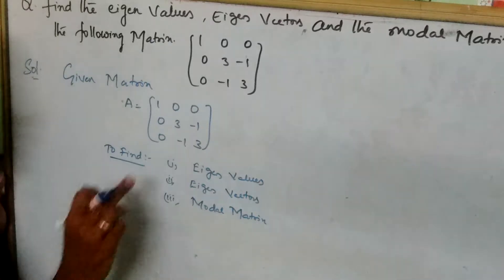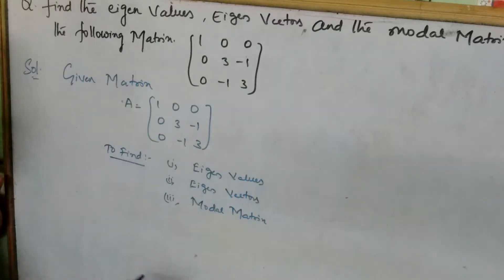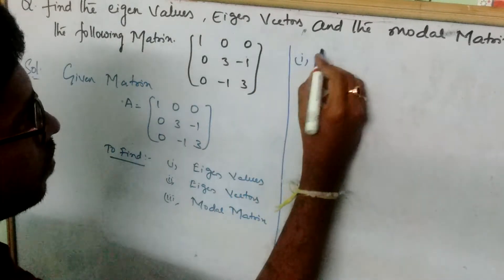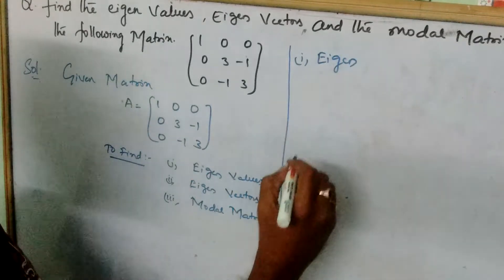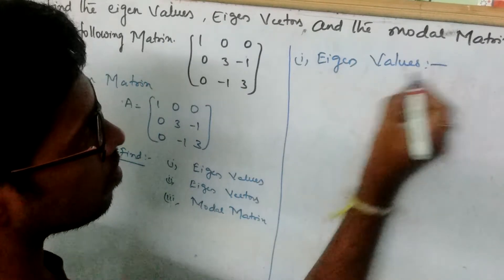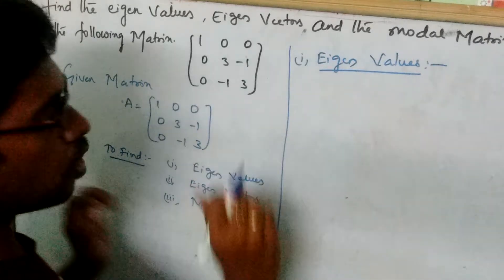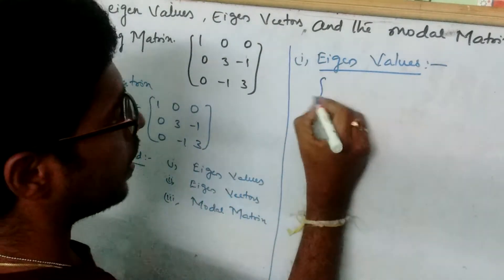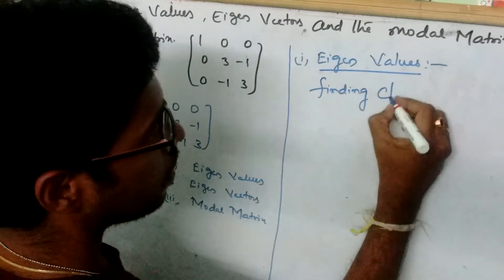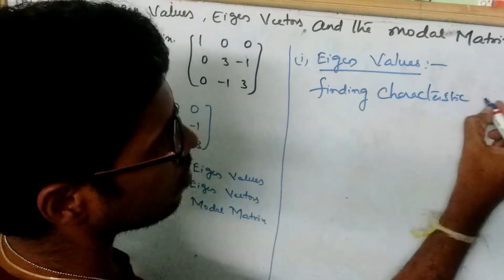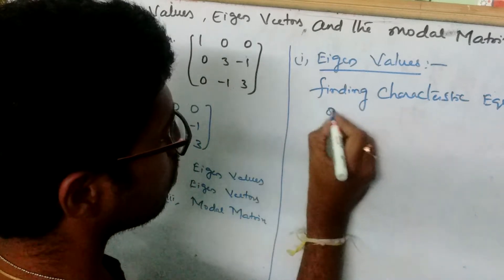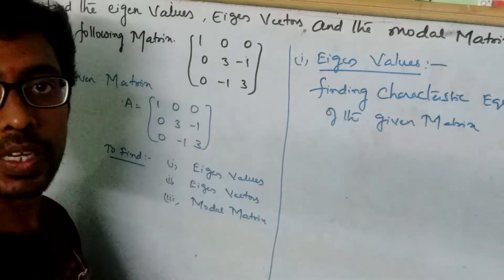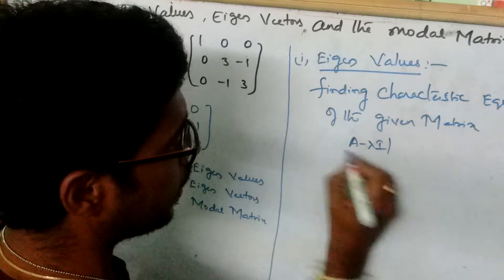First, I am going to solve eigenvalue calculations. To find eigenvalues, we have to find the characteristic equation of the given matrix. The formula is: the determinant of A minus lambda I equal to 0.